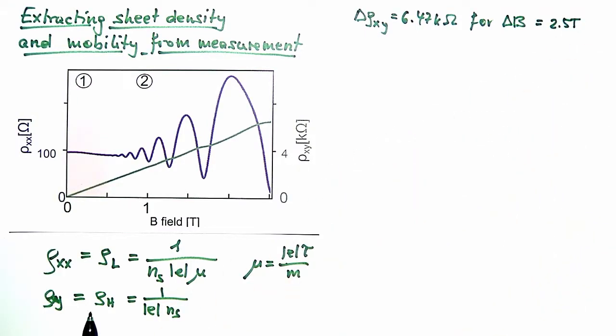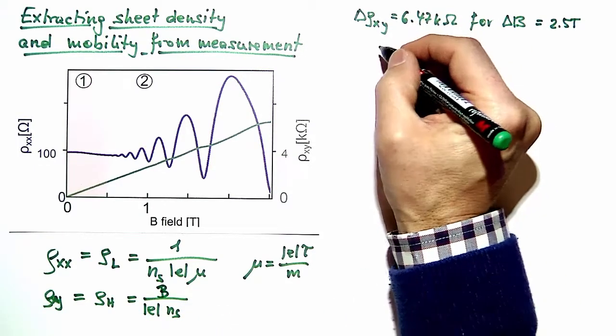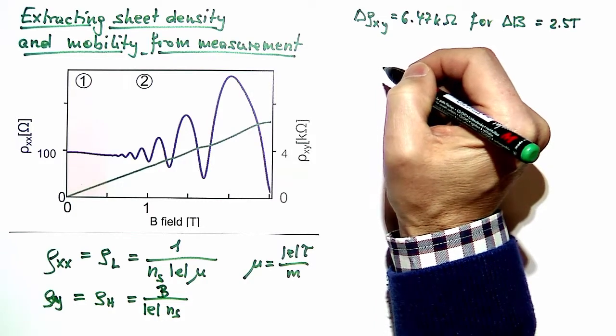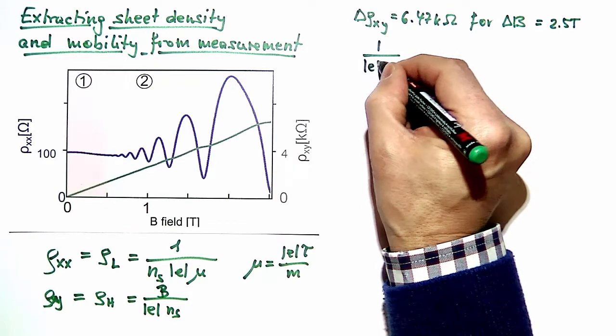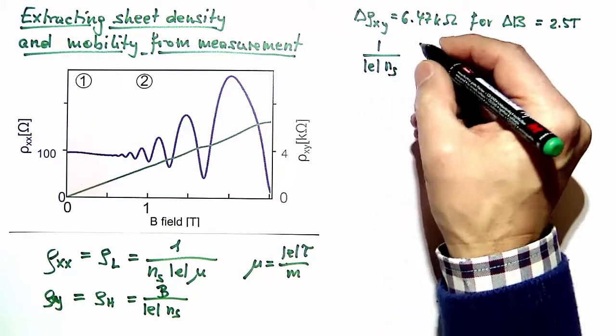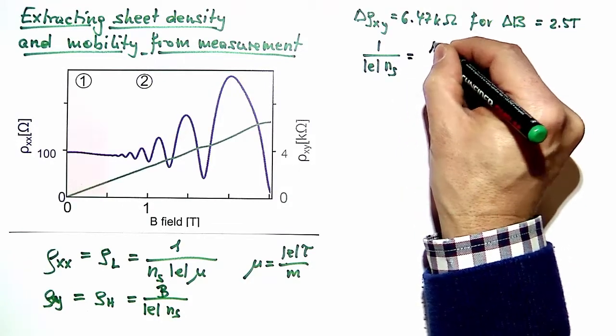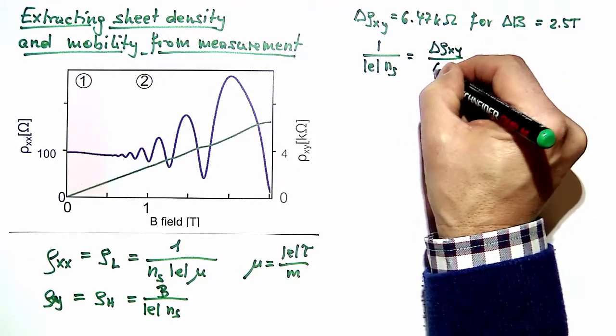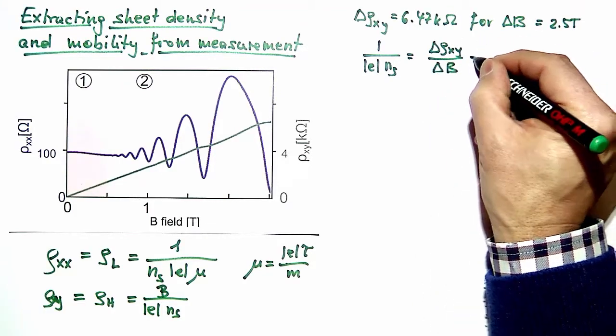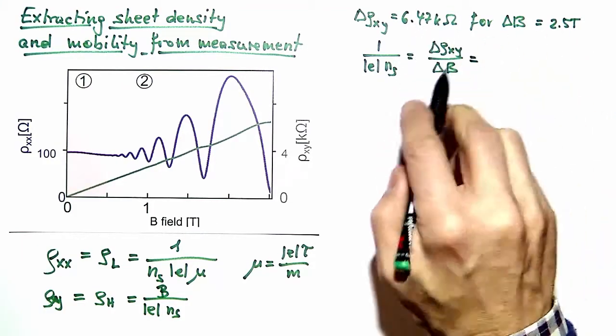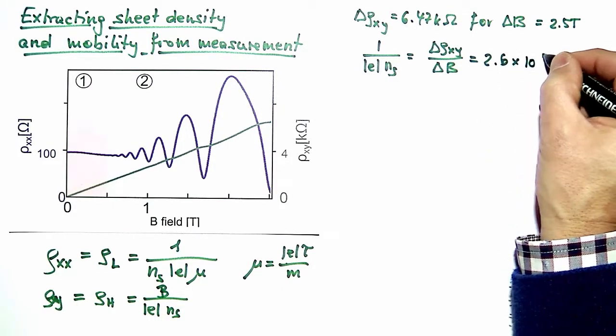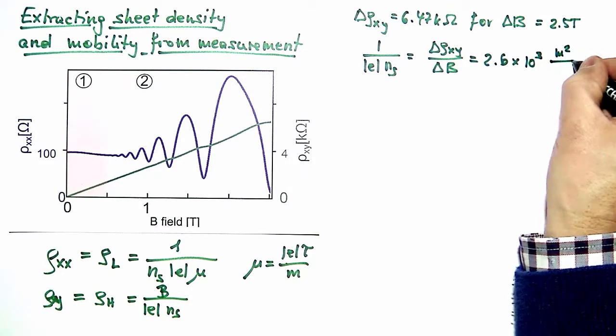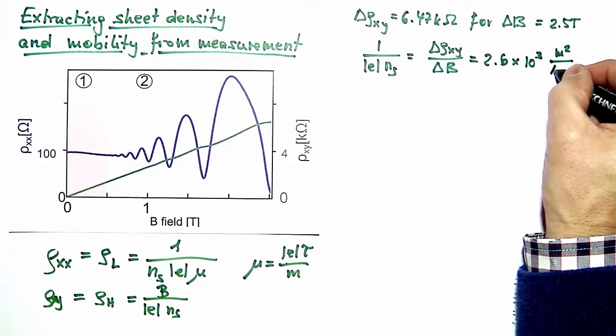Using our formula here, where we miss the magnetic field B, we obtain the fraction 1 divided by the elementary charge times the sheet density is given by delta rho_xy divided by delta B. And inserting these numbers gives 2.6 times 10^3 meters squared per amp seconds.